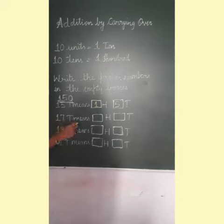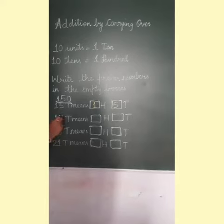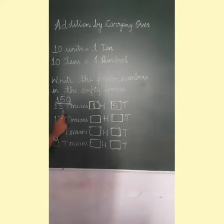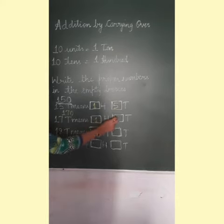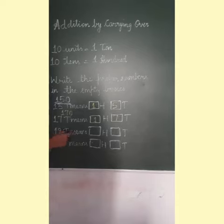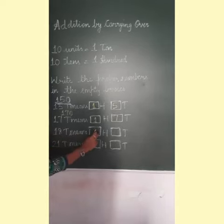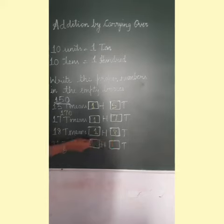Here it is 17 tenths. 17 tenths means 170, so this shows 107 tenths. Next is 18 tenths — 18 tenths means 108 tenths.